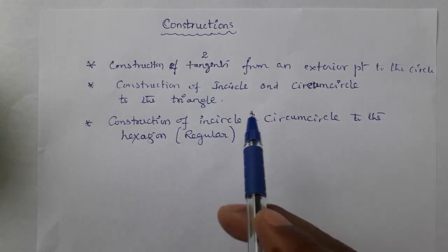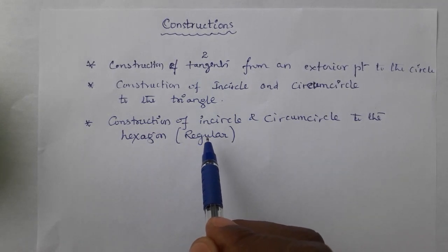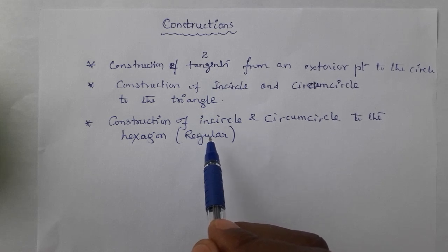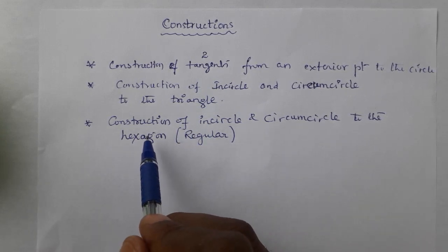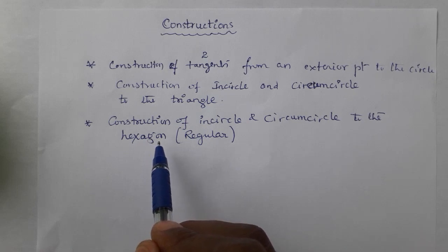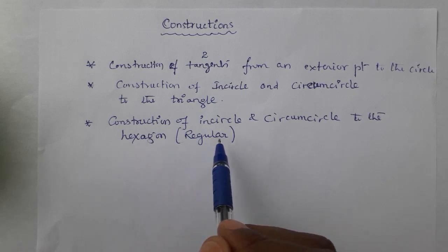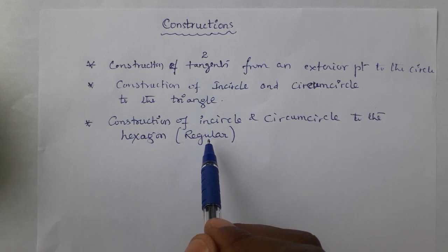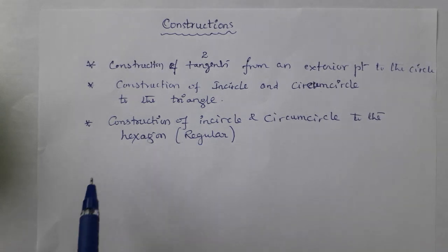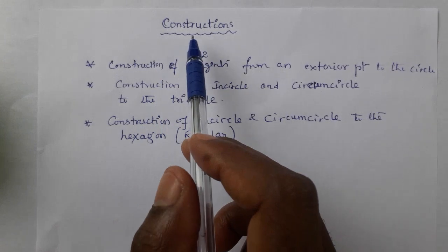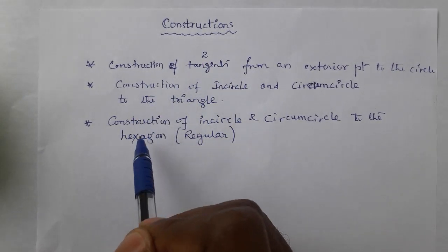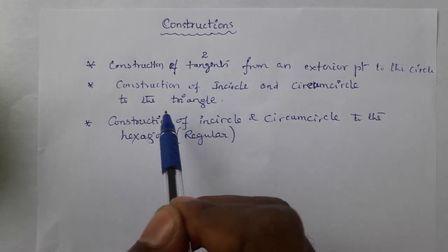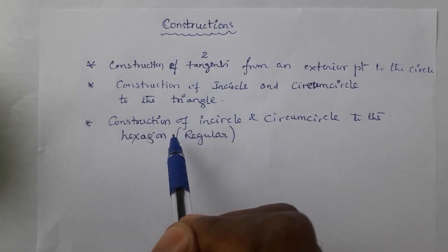It is a regular hexagon, not only hexagon. That means all the angles and all the sides of the given polygon are equal. Those kinds of polygons are called regular polygons. Here, six sides and six angles of the given polygon are equal — that type of hexagon is called a regular hexagon. So in these three types of construction from the chapter, already two we have learnt. This third one is left out, so we will study about this in today's class.